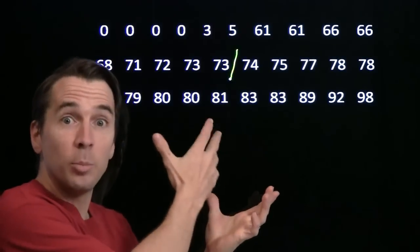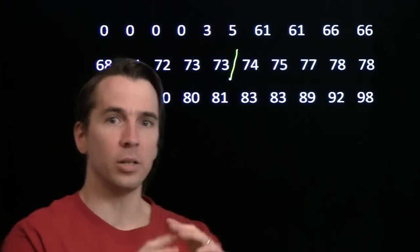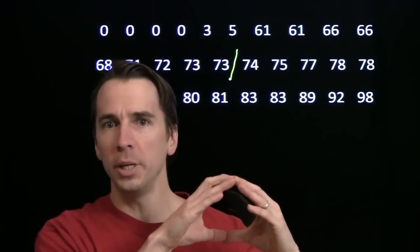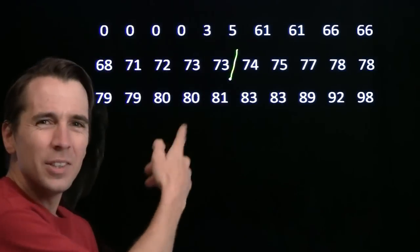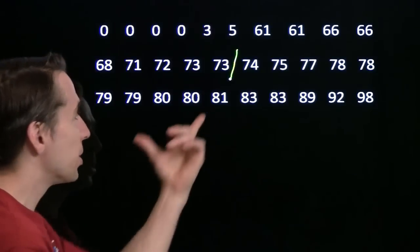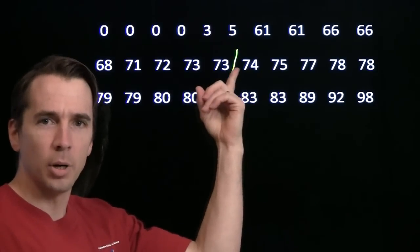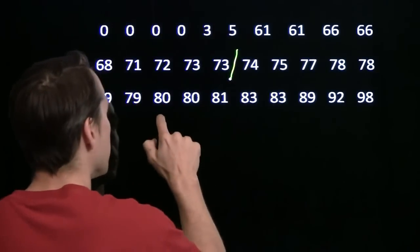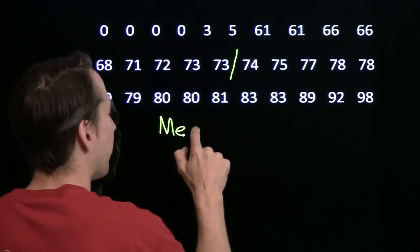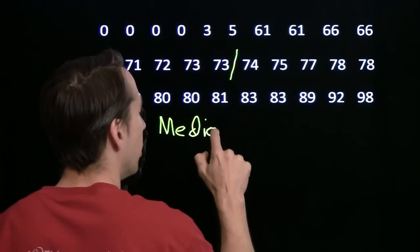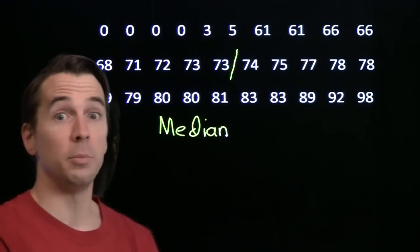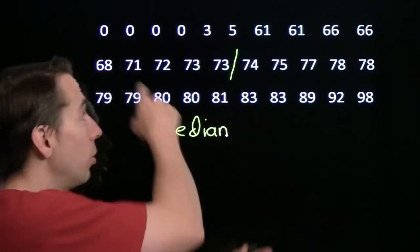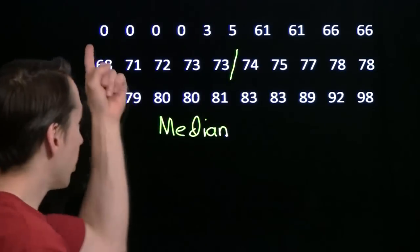Now, if we'd had an odd number of numbers, there would be a single number right there in the middle. We'd circle it. We'd call it the median. Here, we have an even number of numbers. We started off with 30 numbers. There's not a single number in the middle. So here, when we have an even number of numbers, the median is just the average of the middle two. So if we have an odd number of numbers, the median is just that number that comes out right in the middle when you list from the lowest to the highest.